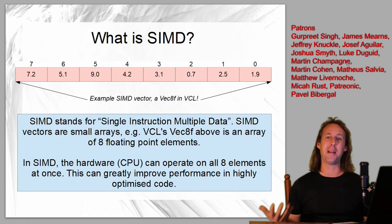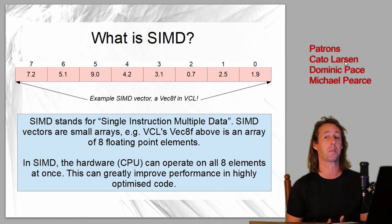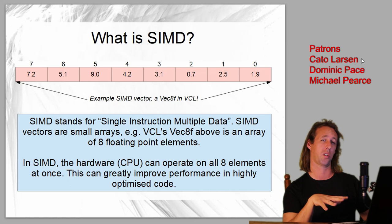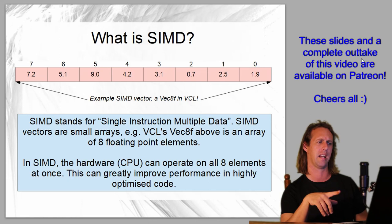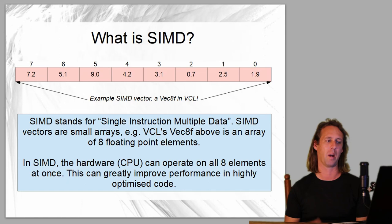So what is SIMD? A little introduction: SIMD stands for Single Instruction Multiple Data. It's a set of instructions in the hardware for optimized performance programming. SIMD basically works on what are called vectors. SIMD vectors are actually just small arrays. You can see here I've drawn out an array of eight floating point values - this is an example of a SIMD vector, and incidentally an example of VCL's Vec8F.